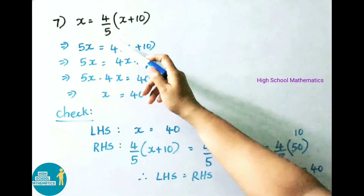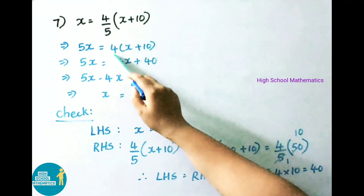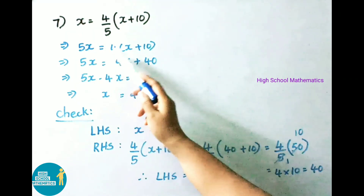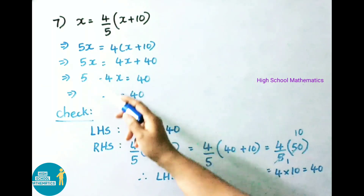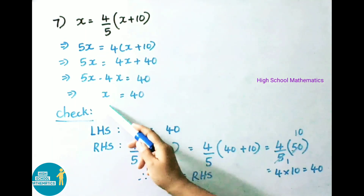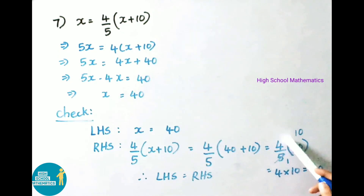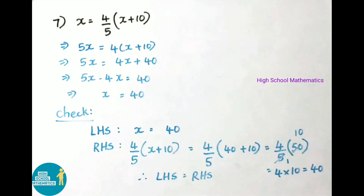Question 7: X = 4/5 × (X + 10). Transposing 5 (dividing becomes multiplying): 5X = 4(X + 10) = 4X + 40. So 5X − 4X = X = 40. Check: LHS = 40. RHS = 4/5 × (40 + 10) = 4/5 × 50 = 4 × 10 = 40. LHS = RHS, hence verified.